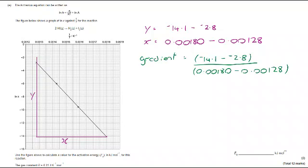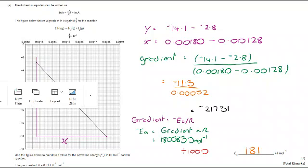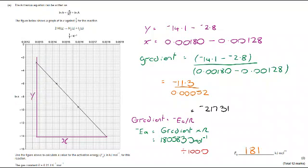Once I've got those in, I can put them into my gradient calculation, change in Y over change in X. You may have actually done the working out to get these numbers, and your numbers might be slightly different. But as long as you work with them and they're close to this and readable from the graph, it will be absolutely fine. That takes us to a gradient of -21.731. Now we know that gradient is -Ea/R. We want activation energy, so we're going to take that gradient and multiply it by R. That takes us to a value of 180,583 joules per mole.